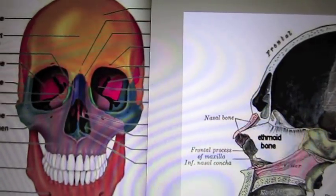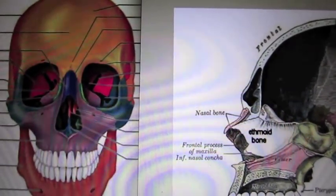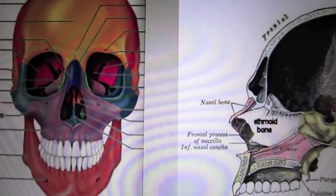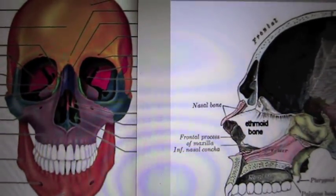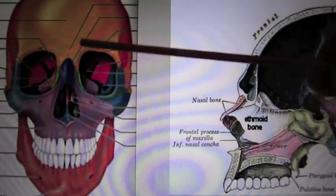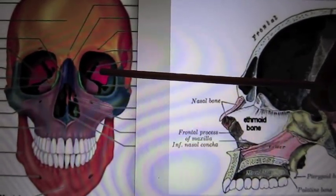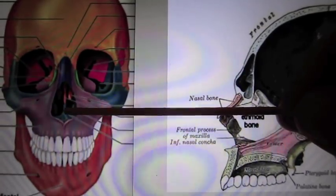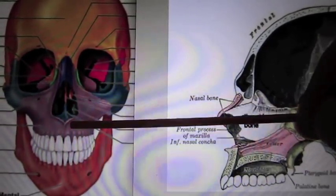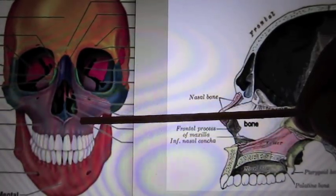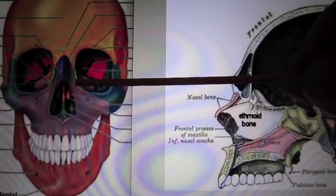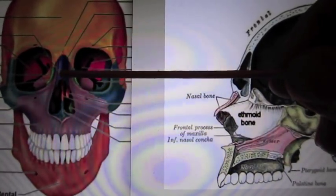No other bone in the body articulates with as many bones as the ethmoid. The 13 bones that the ethmoid articulates with are the frontal, sphenoid, vomer, inferior nasal conchae, maxillae, palatines, lacrimals, and nasals.